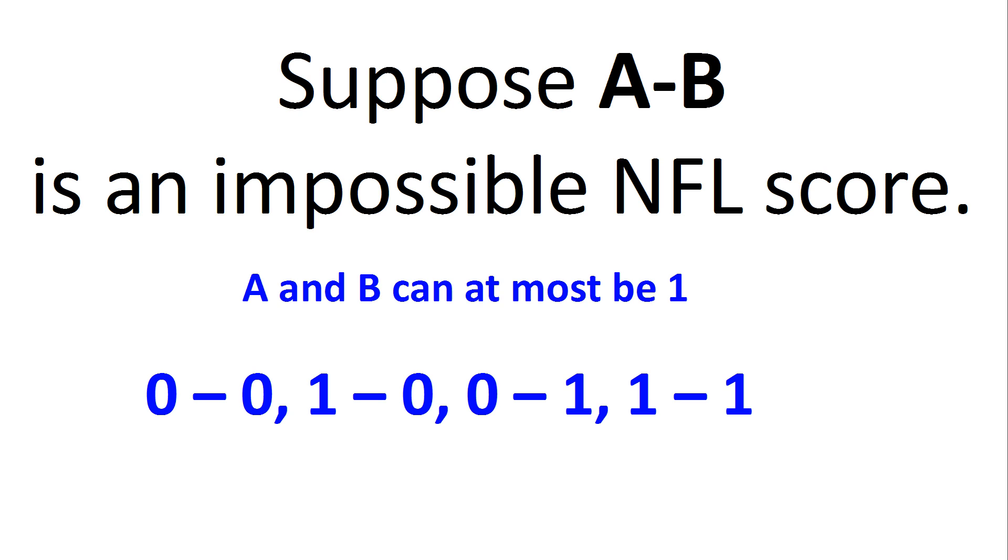So there are only 4 possibilities for an impossible score: 0-0, 1-0, 0-1, and 1-1. It's possible that a game could end in a draw. No team scores at all. The last time this happened was 1943, but it's possible. So 0-0 is not an impossible score.